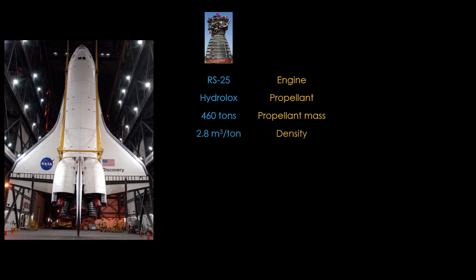Each ton of that propellant requires 2.8 cubic meters of tank volume, for a total of 1290 cubic meters of tankage. It takes up a lot of space because liquid hydrogen is very low density.